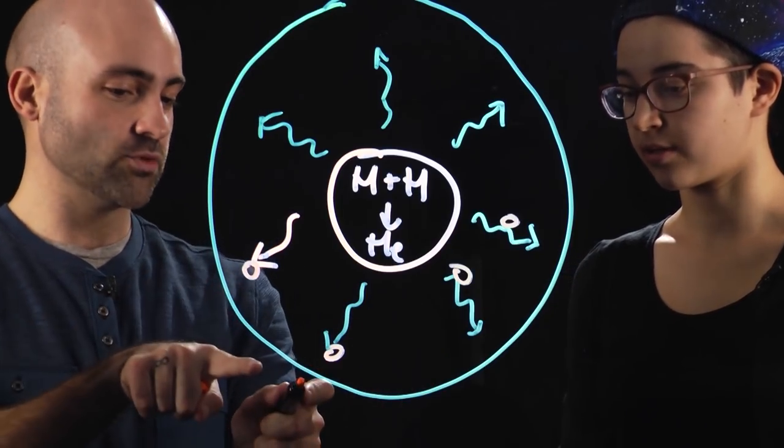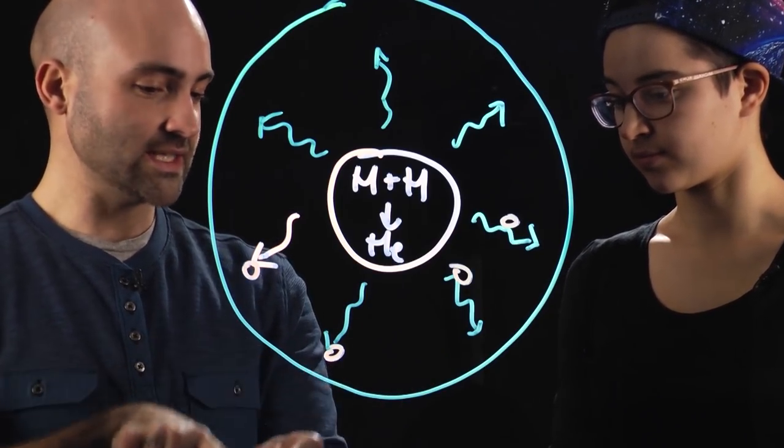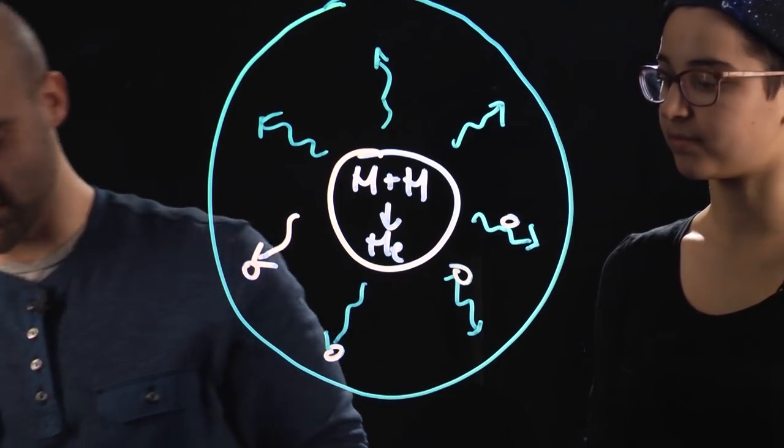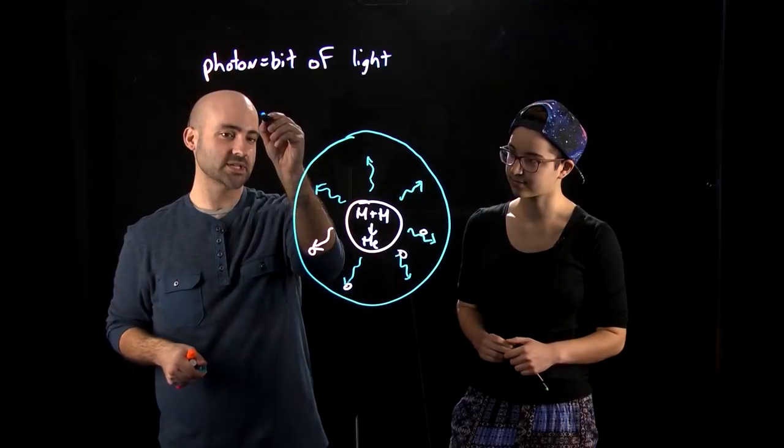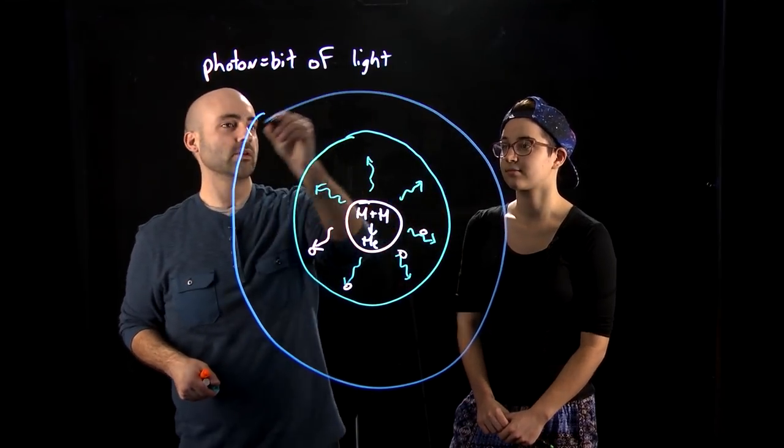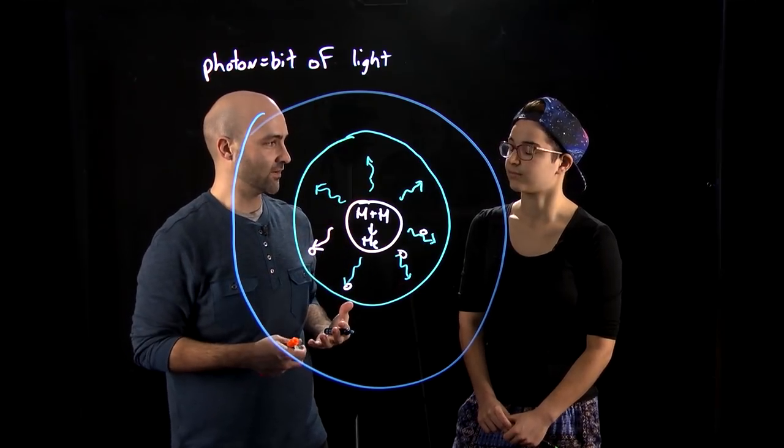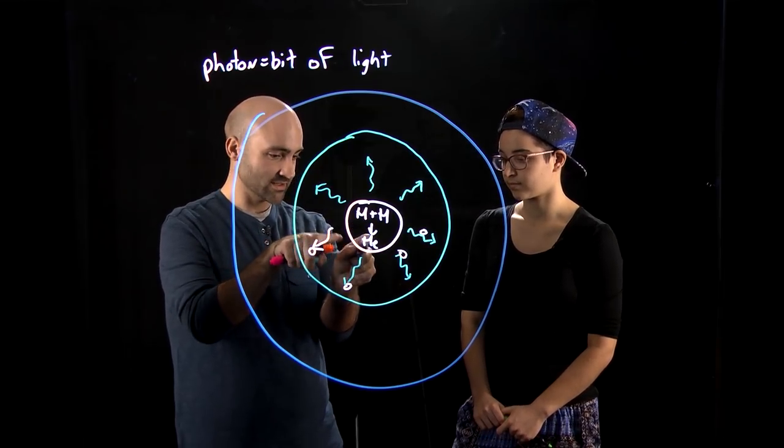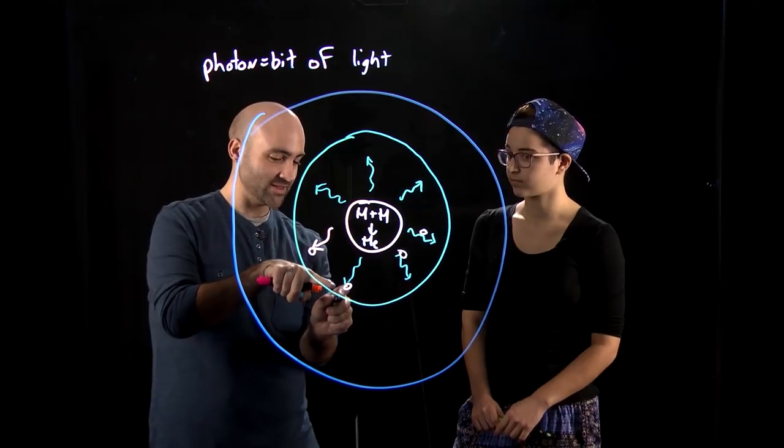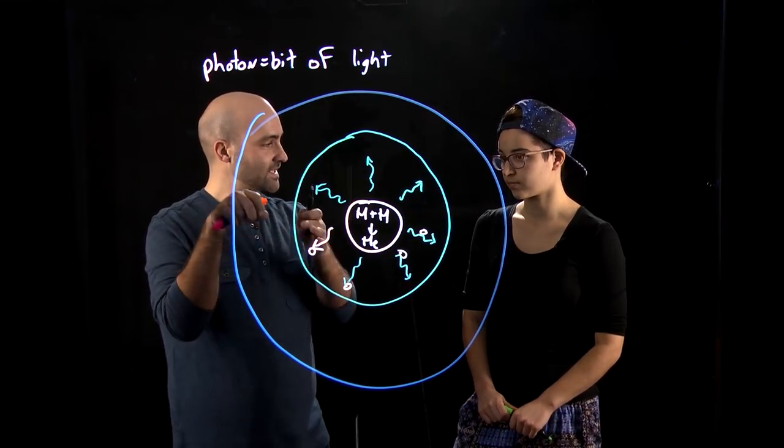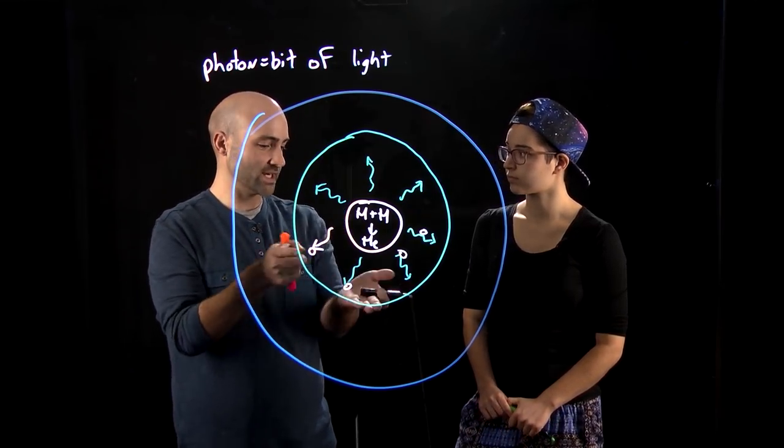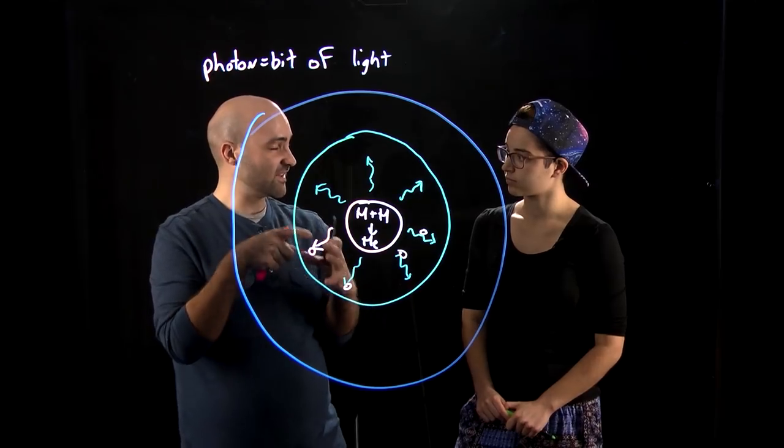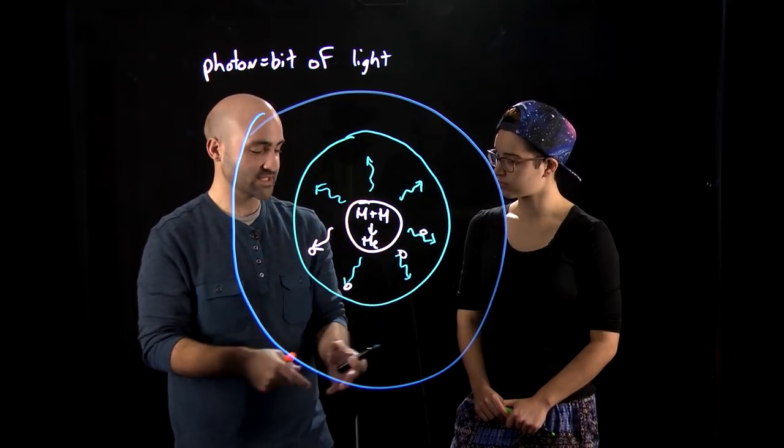But then they get to a point where the density changes enough where there's another layer. I want a new color for this. Blue! So there's another layer that we call the convective zone. The energy is being transported using light in the radiative zone, but then in this region of the Sun, the temperature changes fast enough where it's really hot here and it's really cold here. This means that chunks of gas of the Sun can start blobbing up and down.